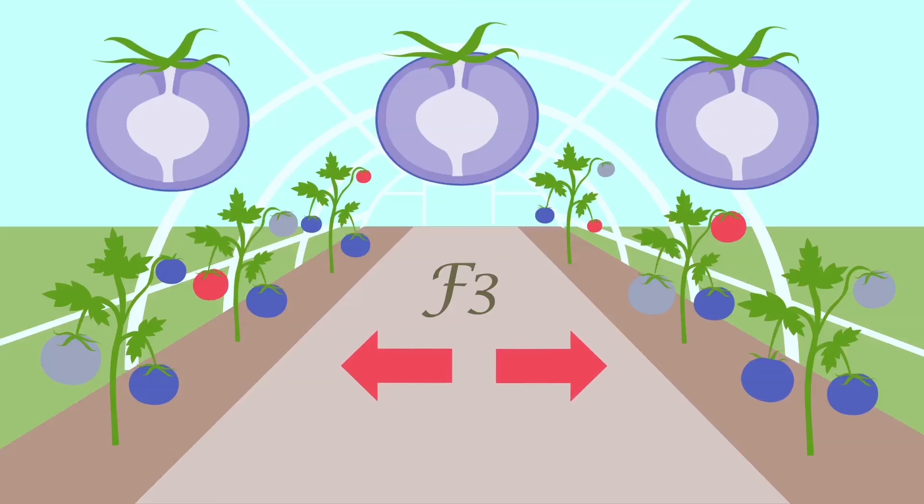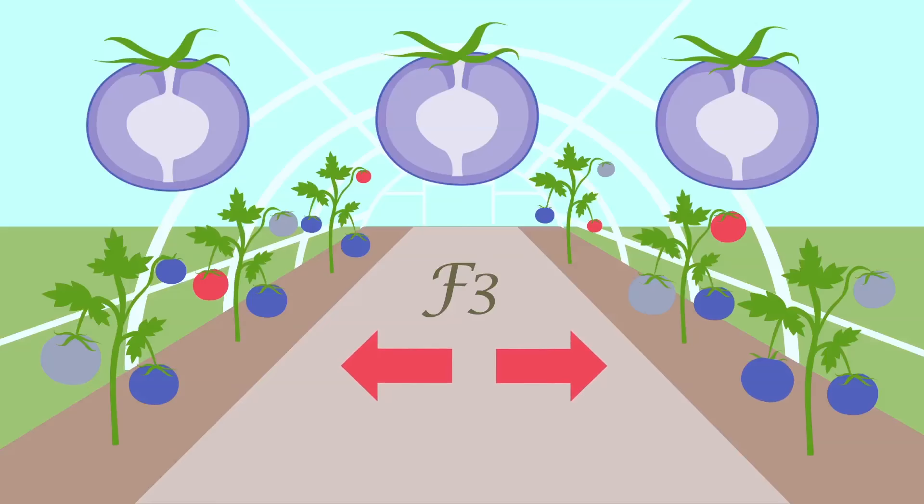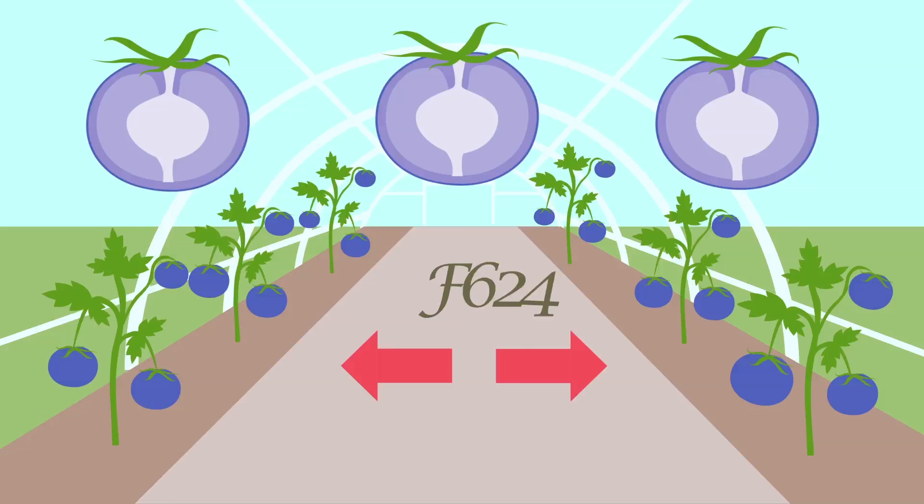They continue to manually select and grow seeds from the bluest tomato plants until they see consistency in color and other desirable traits like disease resistance. In plant breeding, it can take dozens or even hundreds of generations to get the consistency and quality you're looking for.